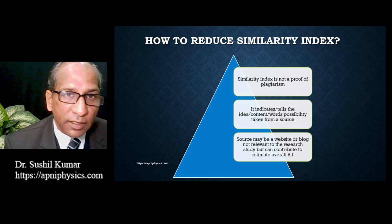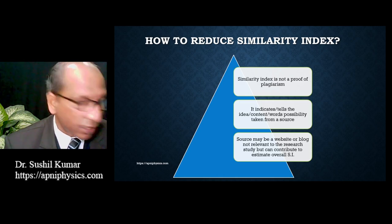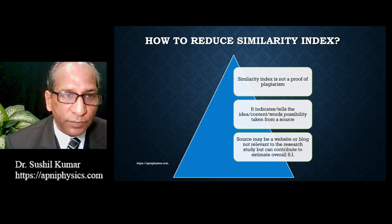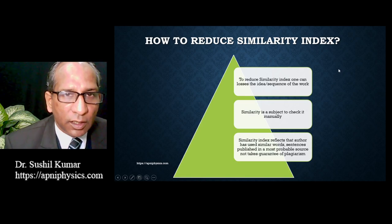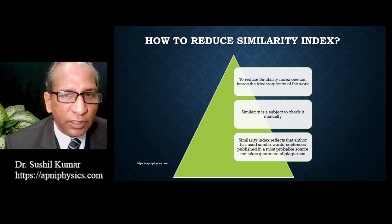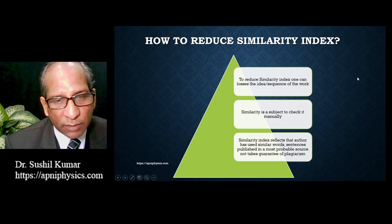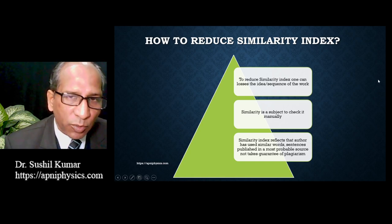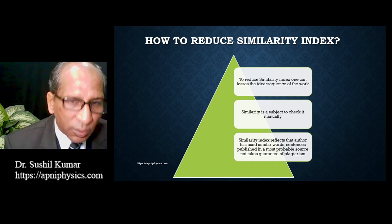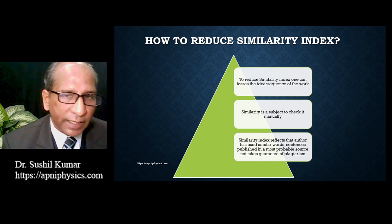Only then can one say whether the similar content in an article is actually a case of plagiarism. Plagiarism and similarity index are two different things, but with the help of the similarity index one can easily find out the most probable source. Now, regarding how to reduce the similarity index: one can lose the idea sequence of the work, which is the drawback. When researchers focus on reducing the similarity index, the flavor of the original content may be lost.